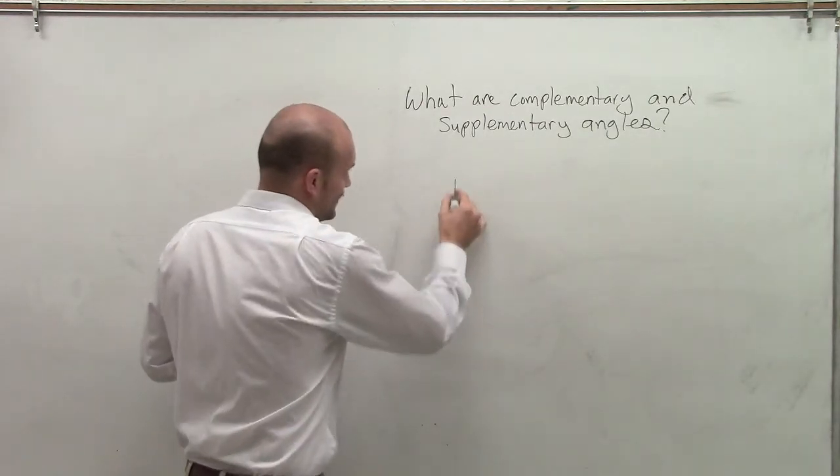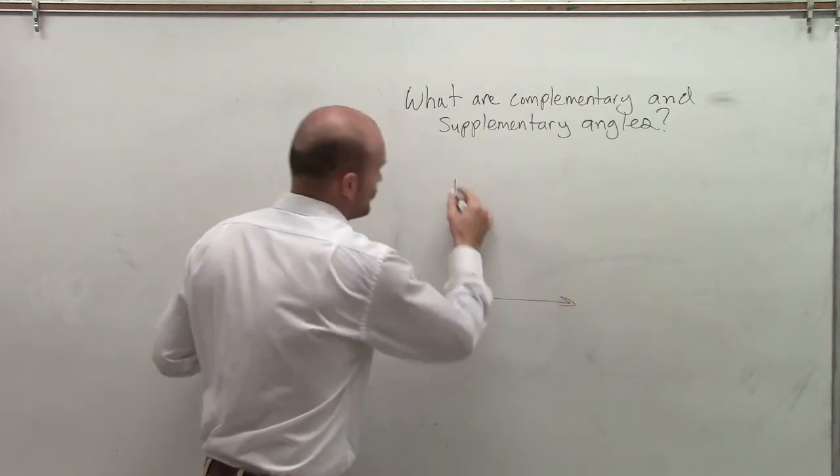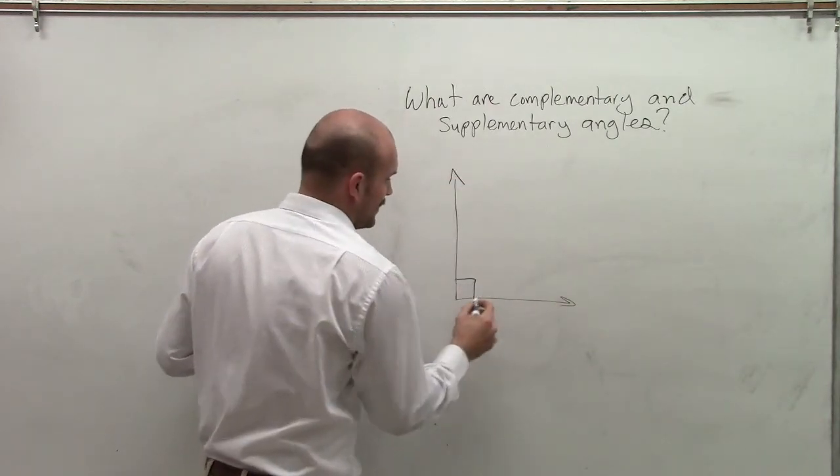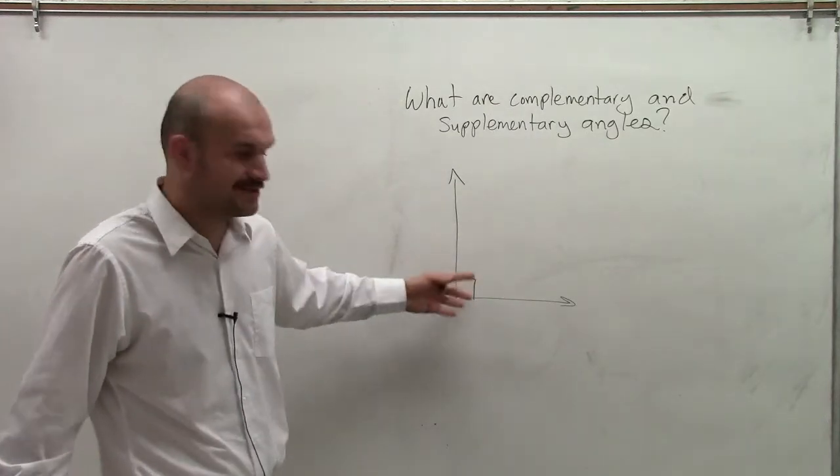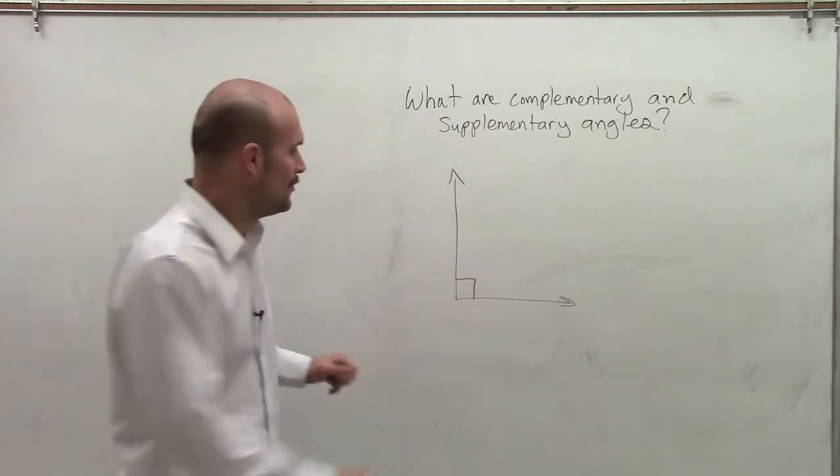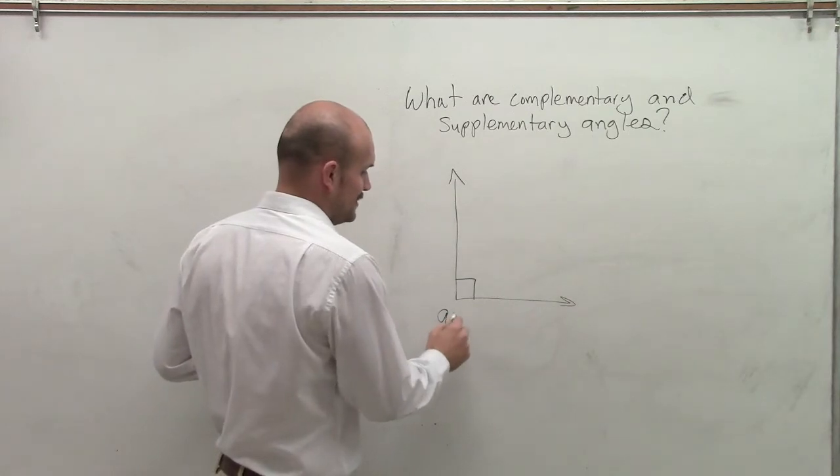The first angle is what we call a right angle. And the reason why I call it a right angle is because it has this right angle here, which is equivalent to 90 degrees.